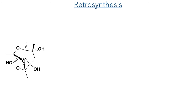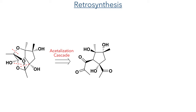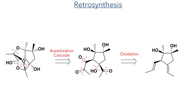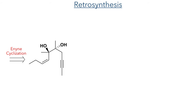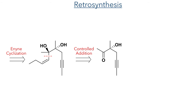The first disconnections occur in the acetal framework, mimicking the proposed biosynthesis via an acetal cascade. This polyketone precursor could be constructed through several oxidation steps from a monocyclic diene, which in turn could be created from an enyne cyclization of an alkene and an alkyne. The alkene could be installed using a stereocontrolled addition to a carbonyl, and this intermediate could be constructed using oxidation chemistry of a simple hydrocarbon precursor.